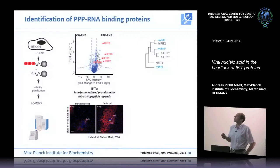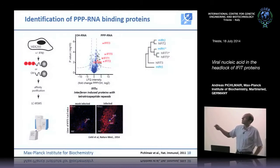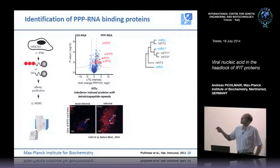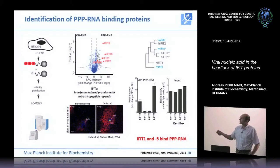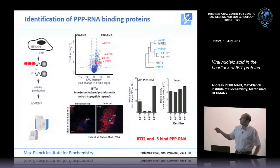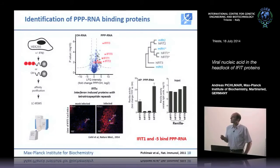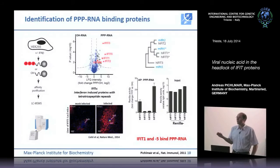In humans there are four different IFITs: IFIT1, 2, 3, and 5. We could identify all of these IFITs in these precipitates. In mice there are only three IFITs: IFIT1, 2, and 3. We wanted to confirm this data by co-precipitation experiments. Overexpressing FLAG-tagged IFIT proteins, we could not fully recapitulate the mass spec results, because IFIT1 and IFIT5 would bind to the beads, but IFIT2 and IFIT3 did not bind to 5' PPP RNA beads in these pulldown assays. This was surprising, and we started to envisage different hypotheses for why this could be the case.